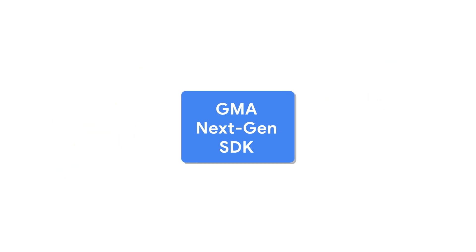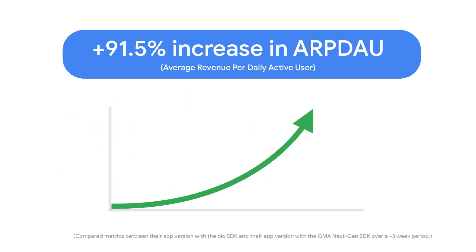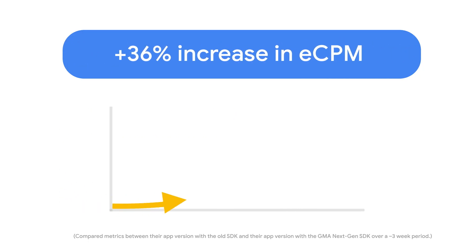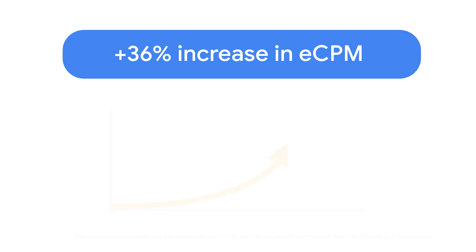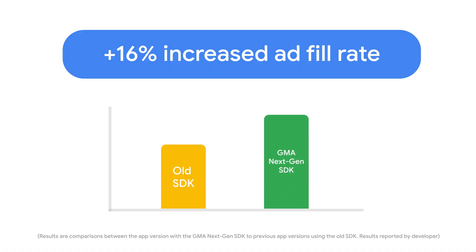In one case, a digital media developer nearly doubled their average revenue per daily active user and had a 36% increase in eCPM compared to our previous SDK over a three-week period. In another case, a developer experienced a 16% increased ad fill rate compared to our previous SDK.